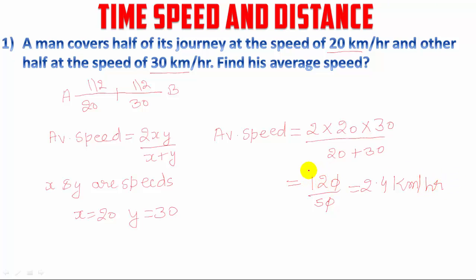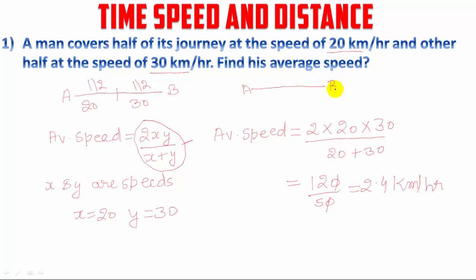Remember one thing, friends — many of you know this formula but don't know exactly where to use it. This formula is used only when the distance covered is the same. You can't apply this formula when the distances covered by the two speeds are not the same. For example, if a man covers one-third at 20 km/h and two-thirds at 30 km/h, you cannot apply this formula. Remember this point always.